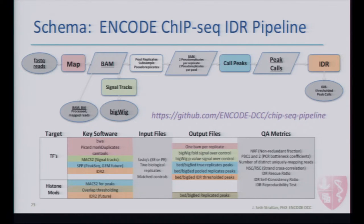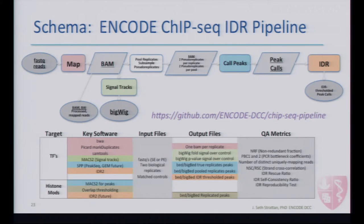Briefly, the ChIP-seq pipeline handles both transcription factors and histone modifications. The mapping step is done with BWA, and duplicates are marked and removed. The peak calling step for transcription factors uses SPP, while for histone modifications it uses MACS2. MACS2 is also used to generate signal tracks for both histone modifications and transcription factors. There is also a piece of software called IDR — a statistical framework that allows assessment of concordance between two replicates.